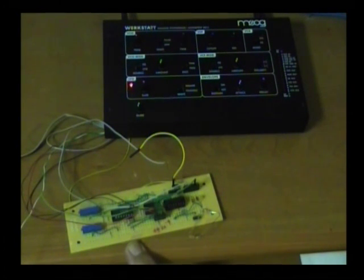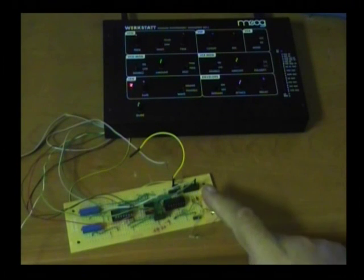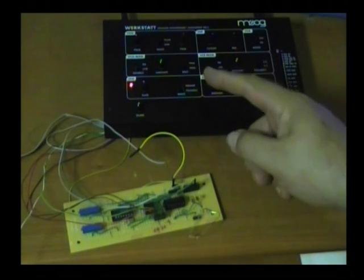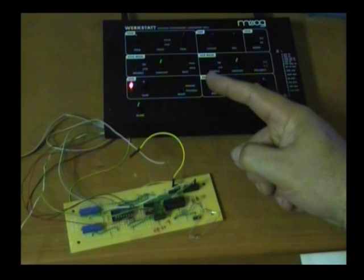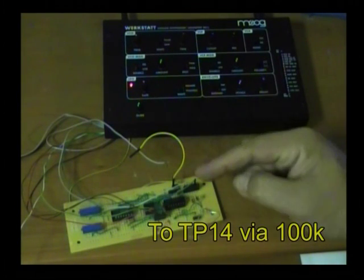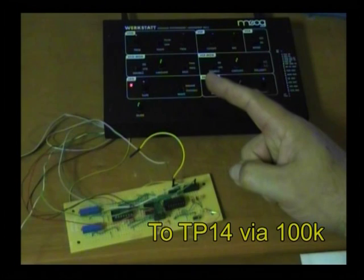This is a control voltage switch, the Moog Workstat. The output goes to the summing amplifier in the VCO. The voltage generated here affects the pitch of the VCO.